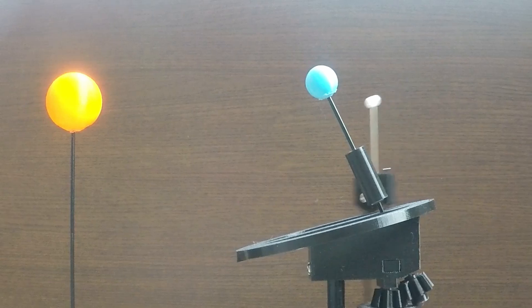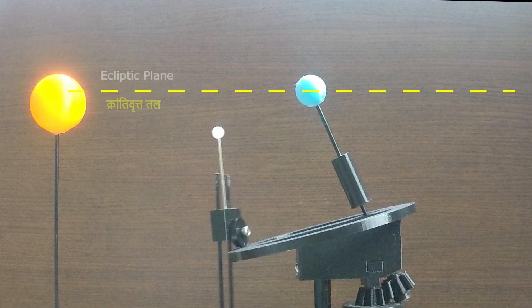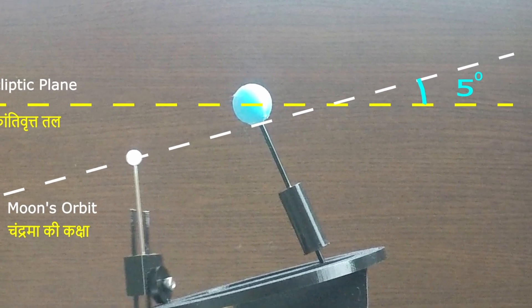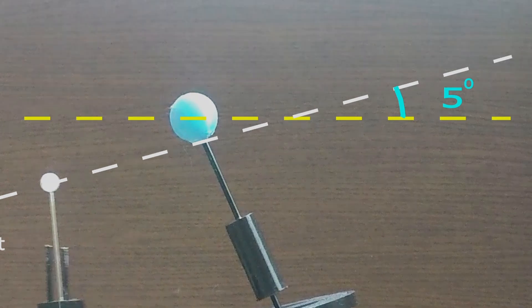How about its orbit? This line represents the ecliptic plane in which Earth revolves around the Sun. And this white line represents the plane in which the Moon revolves around the Earth. Angle between these two planes is approximately 5 degrees in reality. In the model, it is kept around 15 degrees for better visualization of the tilted orbit.